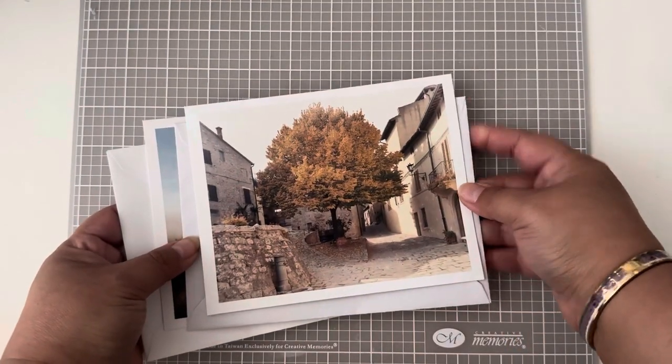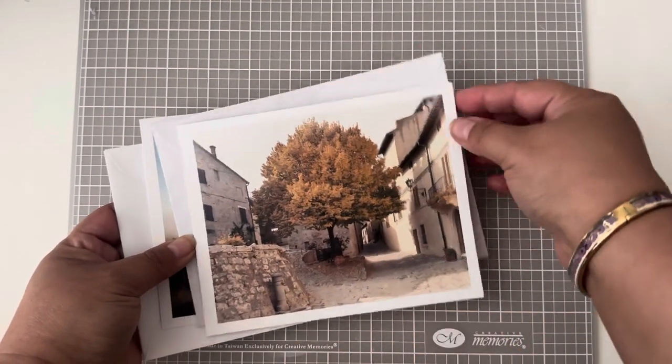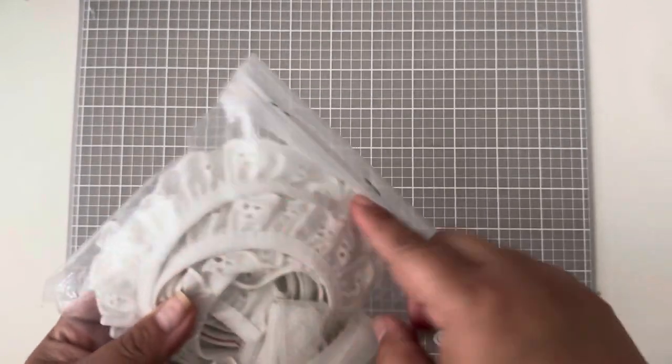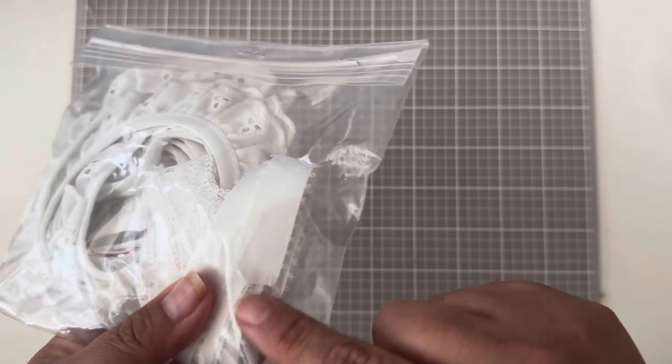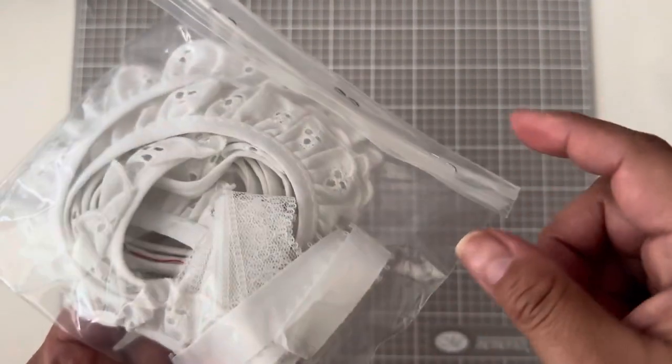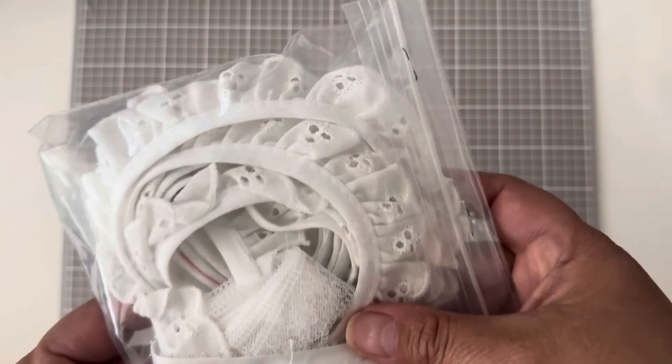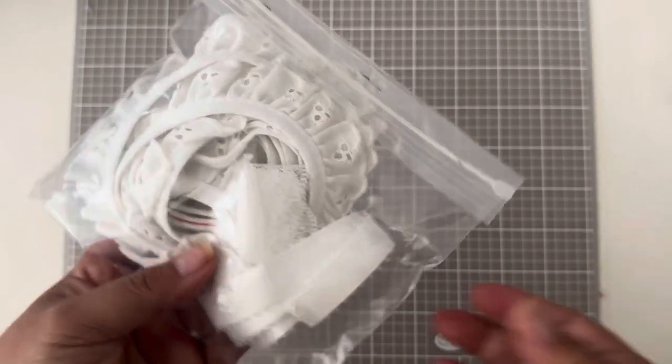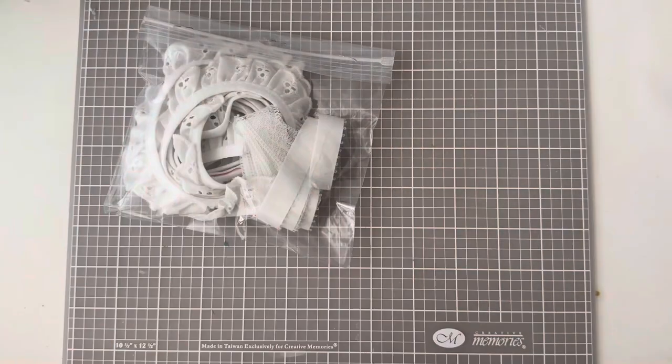So these are the fabrics and trims I got. I got this little ruffle with this little delicate loopy lace. I don't know what that's called. Regular lace, and I have a lot of this but you can never have enough because I do use it a lot.